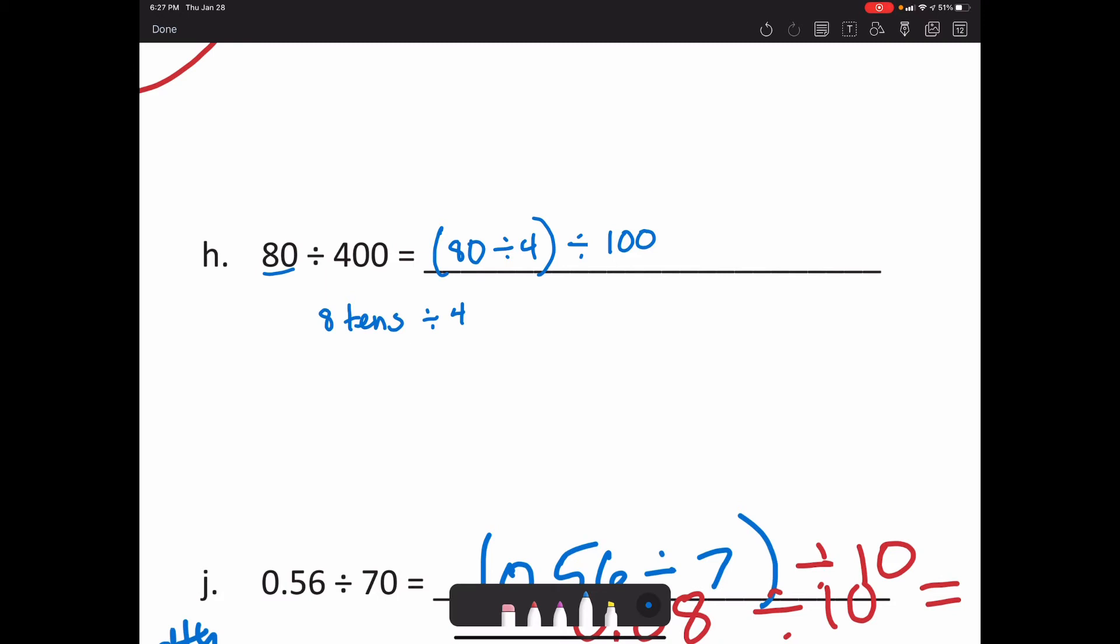So that's what we did here. So we did 8 tens divided by 4, and that equals 2 tens, which equals 20. Now that we've done that, now we're going to divide it by 100.